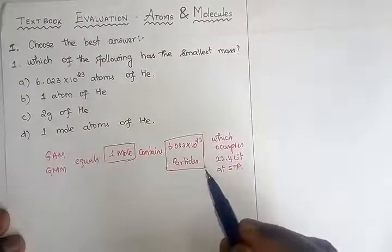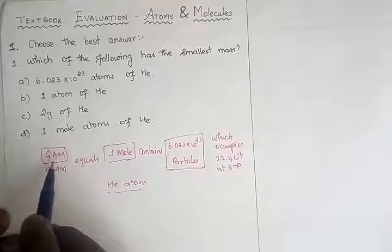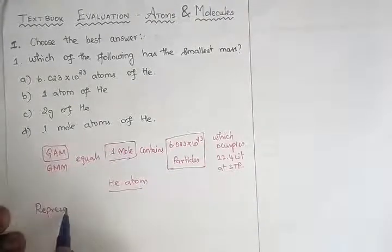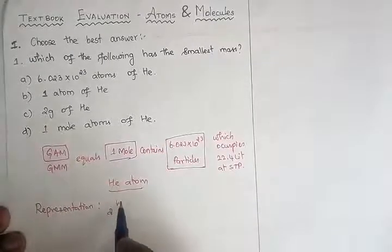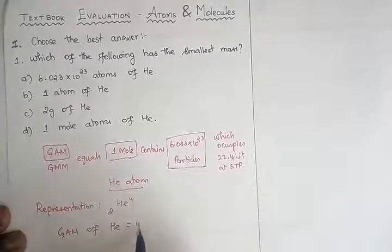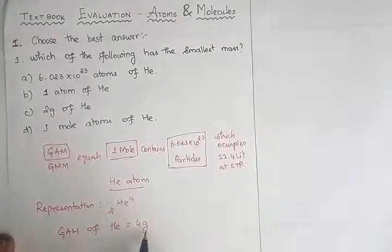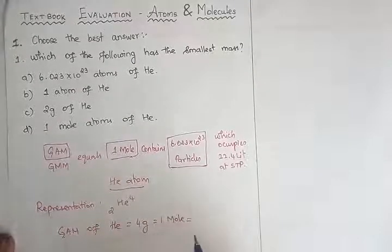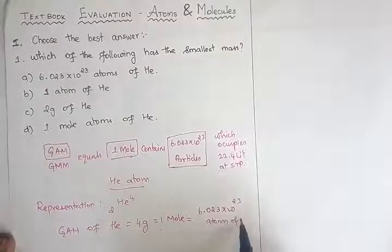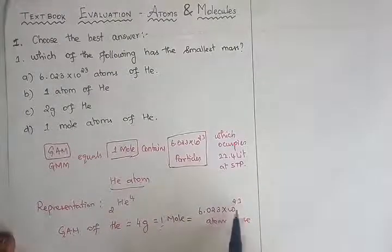Since helium is an atom, the applicable quantity is gram atomic mass. Helium is represented as ₂He⁴, so its atomic mass is 4. Therefore, the gram atomic mass of helium equals 4 grams, which equals one mole. One mole consists of 6.023 × 10²³ atoms of helium. So saying 'one mole of atoms' or '6.023 × 10²³ atoms' are the same.